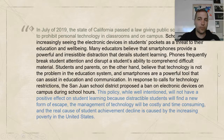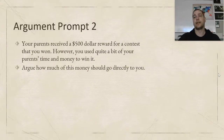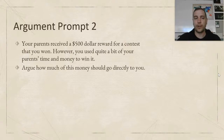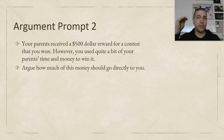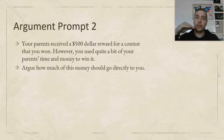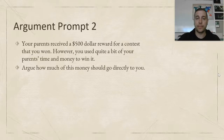Here you can see I start with a hook — an interesting fact about the 2019 California law. Then I talk about what conversation is happening and why people believe different things. Then I give my claim: this policy will not have a positive effect on student learning, followed by my reasons. That's what an introductory paragraph typically looks like. Now I want you to write a couple more paragraphs just like this. For prompt two: your parents receive a $500 reward for a contest you won. However, you used quite a bit of your parents' time and money to win. How much of this money should go directly to you? Write to your parents convincing them, starting with a hook, entering the conversation, and giving your claim.